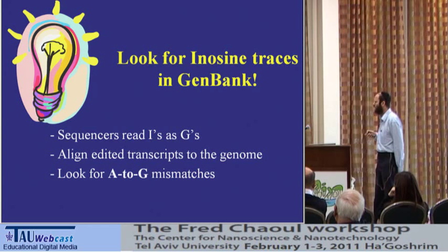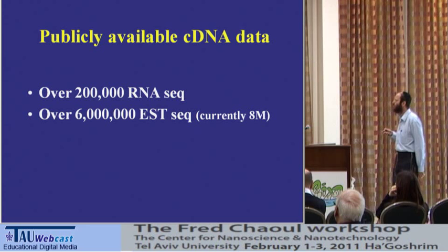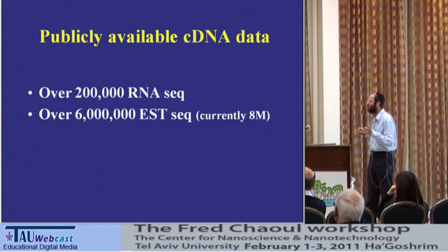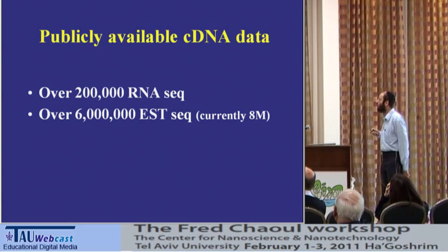We took what was available at the time: 200,000 RNA sequences and 6 million ESTs — expressed sequence tags — short sequences about 500 base pairs long from cDNA. We took these sequences and tried to look for mismatches.